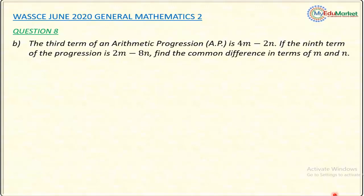The third term of an arithmetic progression AP is 4M minus 2N. If the ninth term of that progression is 2M minus 8N, the question asks to find the common difference of this arithmetic progression in terms of M and N.